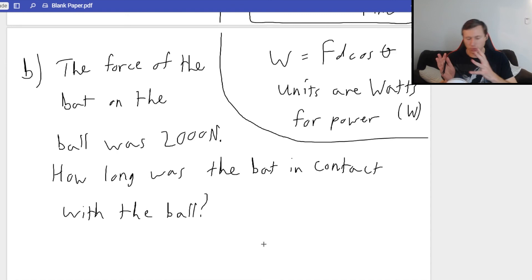I'll give you a second for you all to write that down. The force of the bat on the ball was 2,000 newtons. How long was the bat in contact with the ball? So obviously here I give you a force, I'm asking for a time. This is going to be that other equation for impulse.